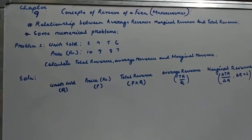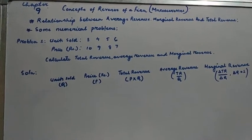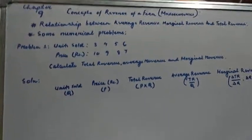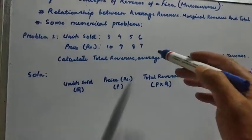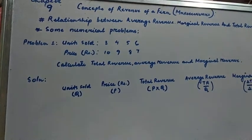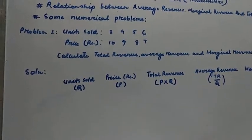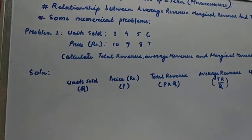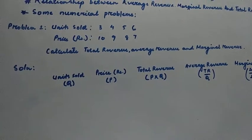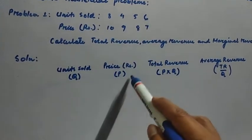In this class, let us do some numerical problems regarding total revenue, average revenue, and marginal revenue. From the given table, we have to calculate total revenue, average revenue, and marginal revenue. We can find total revenue by multiplying the units of output by price.